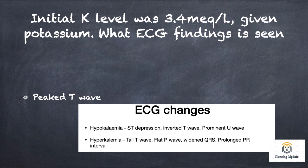Initial patient potassium level is 3.4. When potassium gets low, the ECG change to look for is peaked T-wave. Screenshot shared for reference.